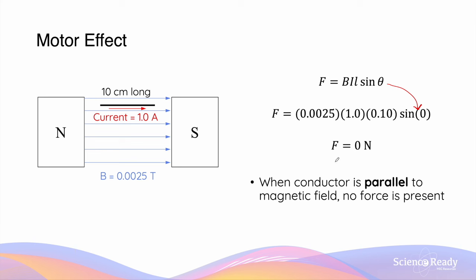That means the force acting on the conductor also becomes 0 Newtons. In simpler words, when the conductor is parallel to the magnetic field, there will be no motor effect force acting on it.